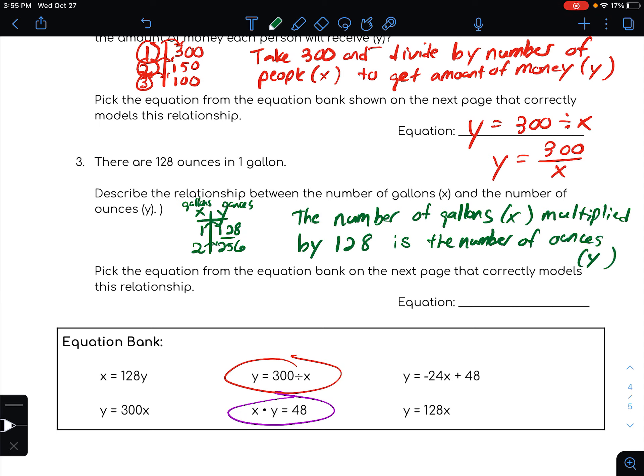All right, so it kind of looks like this one, but actually it's this one, right? 128 times x is equal to y, not 128 times y is equal to x. So let's be careful with that one. y equals 128x, so that would be the relationship that converts from gallons to ounces.